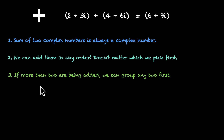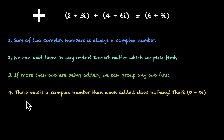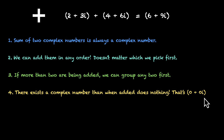The next one is similar: if more than two complex numbers are being added, we can group any two first. So if there were three complex numbers, we could pick any two, add them, and then add the third — the answer would not change. Then there exists a complex number that when added does nothing: that's 0+0i. Try adding it to any complex number; you'll get the same complex number.